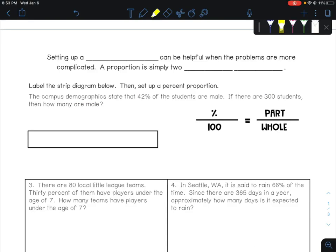For our next method, it's called a proportion. Setting up a proportion, we've heard this word before, can be helpful when the problems are more complicated. What I mean by that is when the numbers are not nice, it's definitely not going to be easy to use this tape diagram method. But the proportion method right here always works. A proportion, again, to remind you, is just two equal fractions.